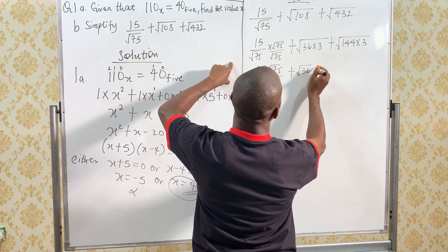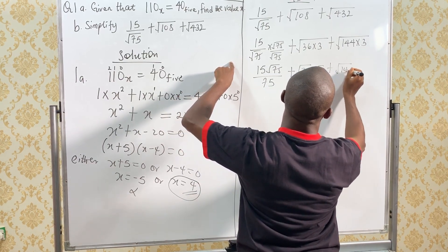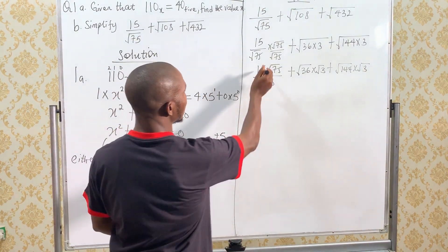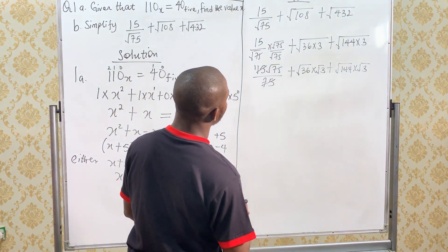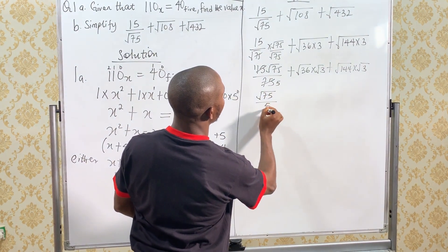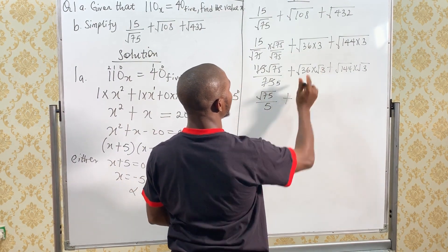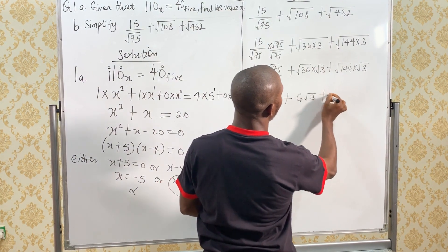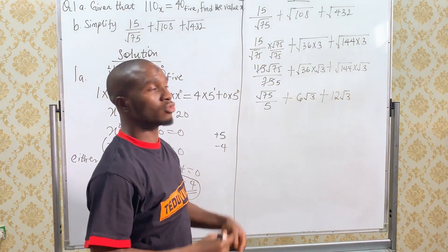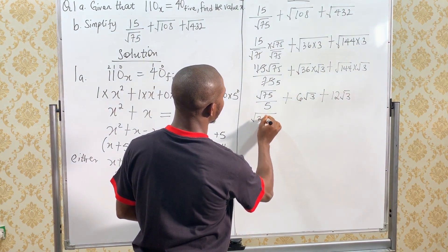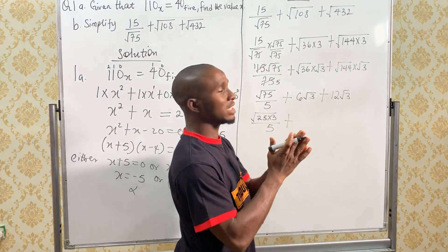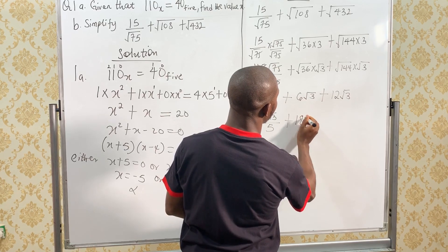this can be separated root 36 times root 3 plus root 144 times root 3. Now, 15 can go into 75. 15 in 75 should give us 5. So, we have root 75 over 5 plus the square root of 36 is 6 then root 3 plus the square root of 144 is 12 then root 3. Now root 75 will be breaking down into 25 times 3. So, that will be the square root of 25 times 3 divided by 5 plus 6 root 3 plus 12 root 3 can be combined. 6 plus 12 becomes 18 root 3.